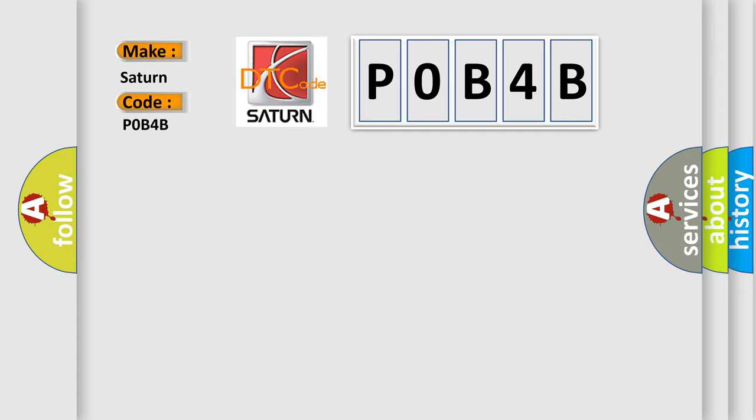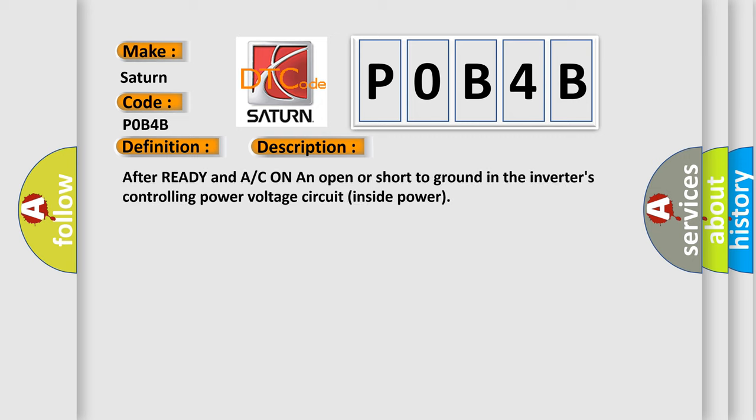The basic definition is: Electric compressor hybrid. And now this is a short description of this DTC code. After READY and A/C ON, an open or short to ground in the inverter's controlling power voltage circuit (inside power).